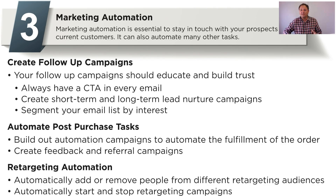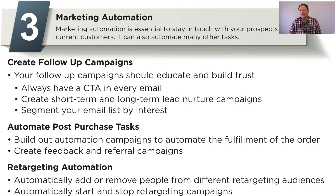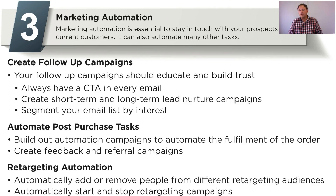Reviews will help increase your conversions too, because a lot of people want to see reviews before making their buying decision. With retargeting automation, you can automatically add and remove people from different retargeting audiences. If you're retargeting a person because they didn't purchase a product, you automatically add them and start running retargeting campaigns. But if they purchase that product two weeks down the road, you automatically remove them from that audience and move them into a retargeting campaign showing ads for related products, to try to get them to purchase more from you. You can automatically start and stop these campaigns.